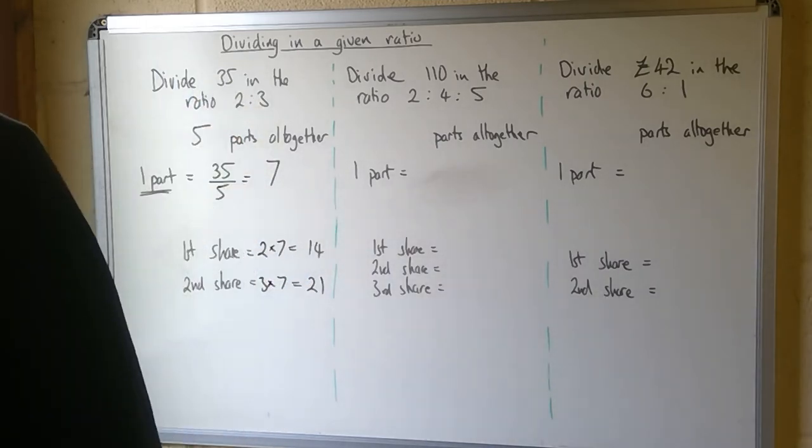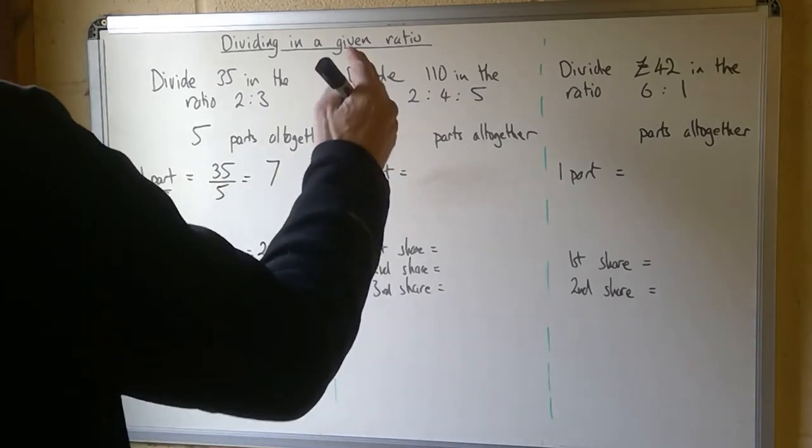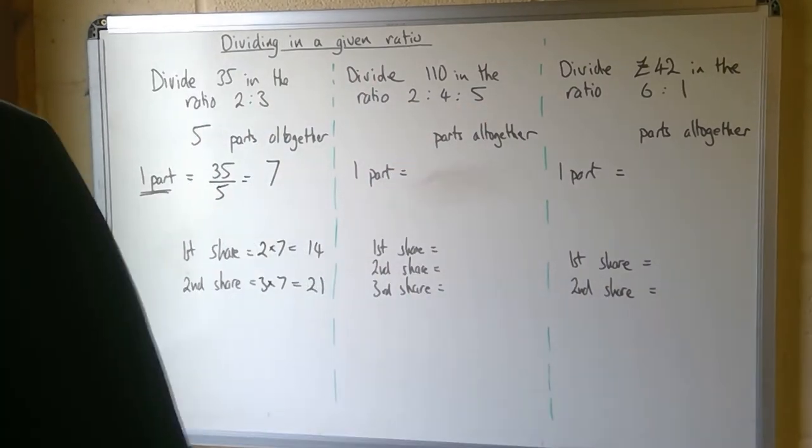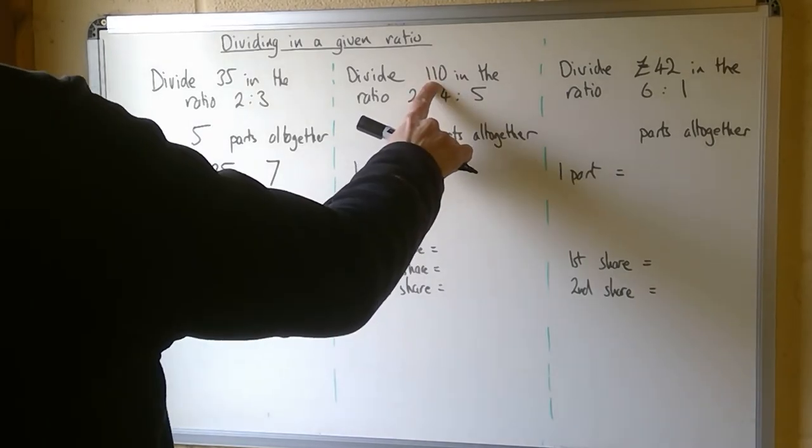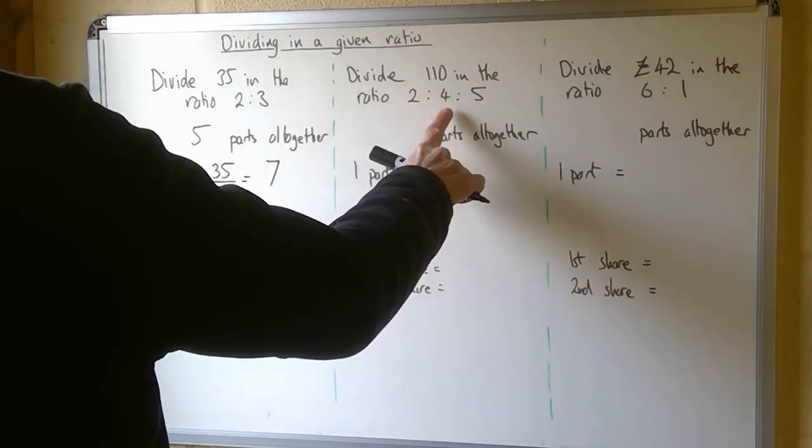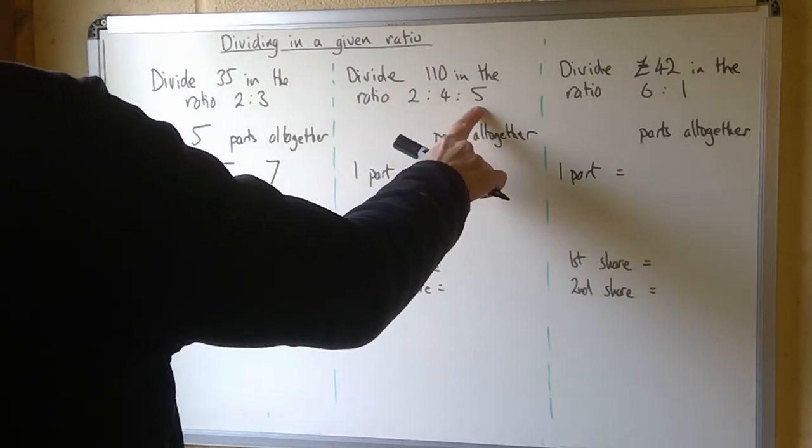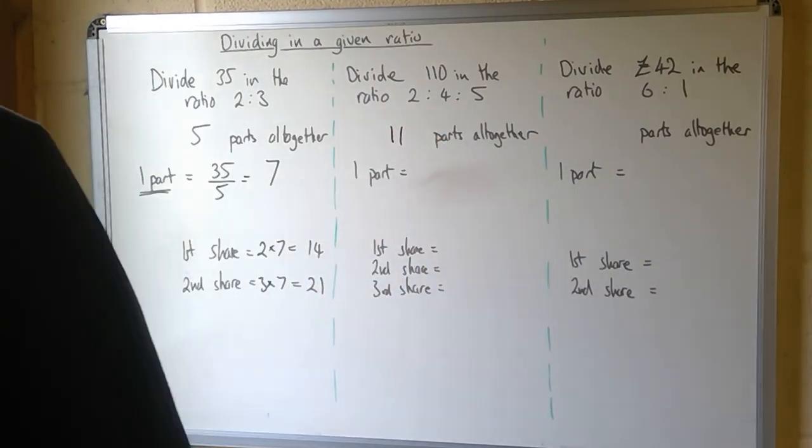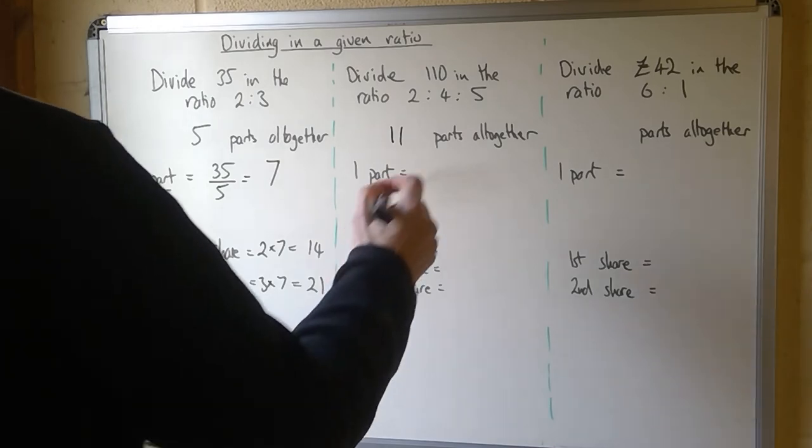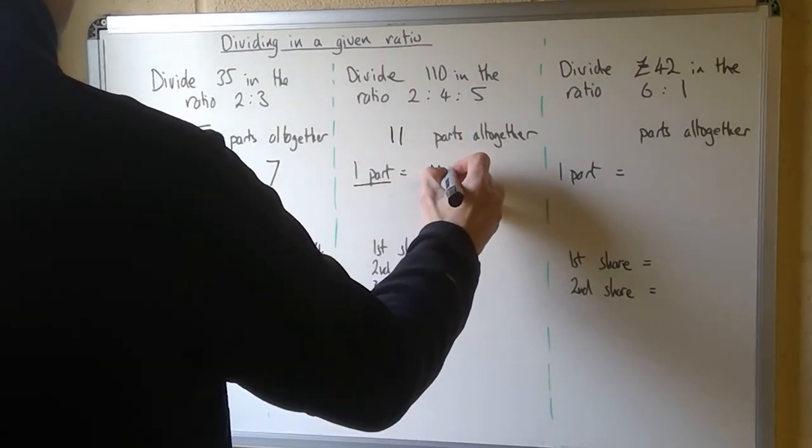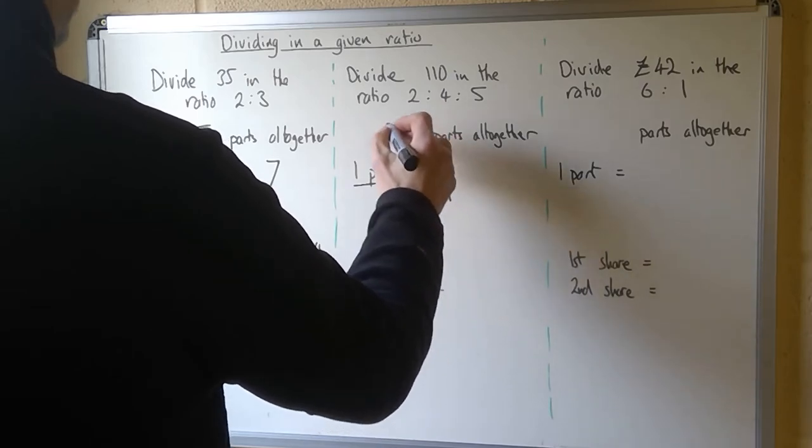The beauty of ratio is I can split it into lots of different sections. This was two sections, this one is three, but it works in exactly the same way. So this time I'm sharing 110 in the ratio 2 to 4 to 5. So if I add 2 and 4 and 5 together, I get 11 parts altogether. So one part, this is the really important part, is 110, the total, divided by the number of parts.